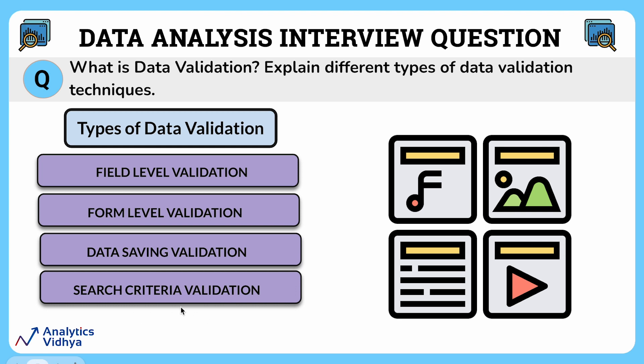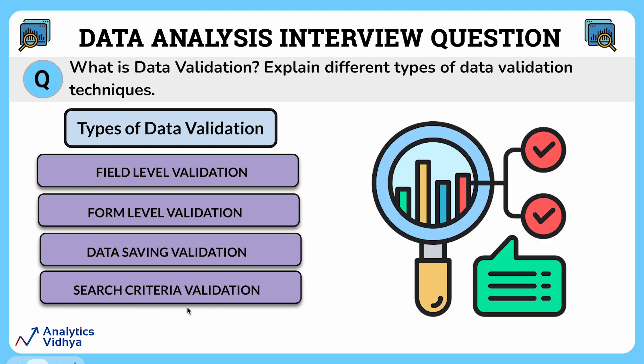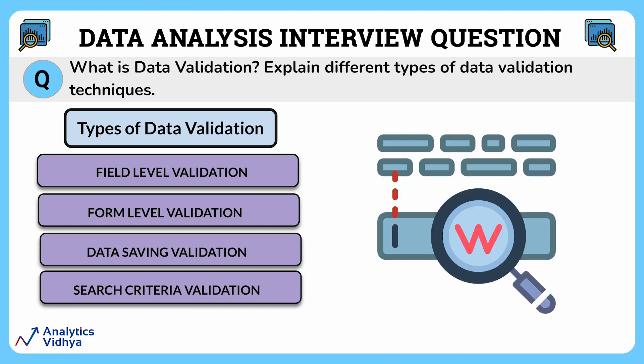Finally, search criteria validation. Search criteria validation is used to check whether valid results are returned when the user is looking for something. Think of this like using a search engine where you are making sure your search terms are clear and will give you the right result when you look for something online. So this is a basic idea about different types of data validation techniques.